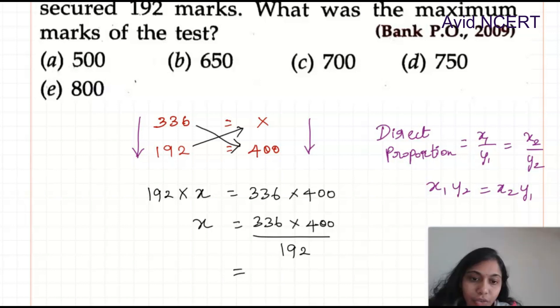x equals 336 times 400 divided by 192. To simplify this, 4 times 100 is 400. And here, 4 times 4 is 16, 17, 18, 19. So 8 times is 32.